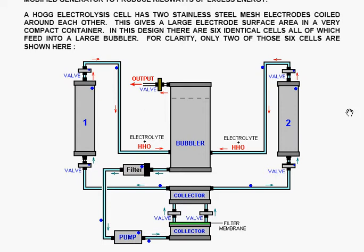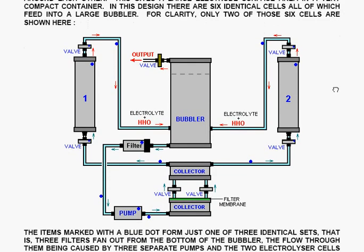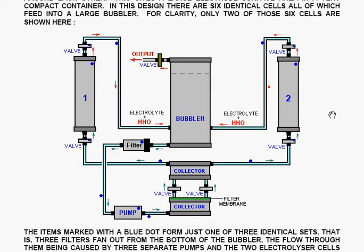In this design there are six identical cells all of which feed into a large bubbler. For clarity only two of these six cells are shown here. This is an electrolyzer cell here producing HHO and this is another electrolyzer cell also producing HHO.